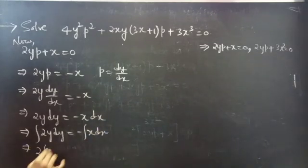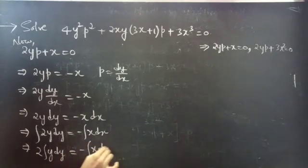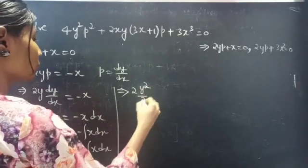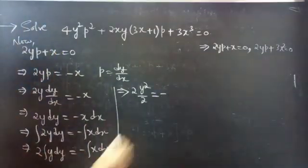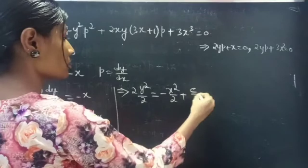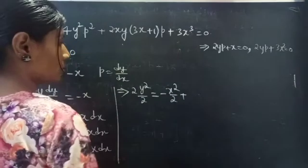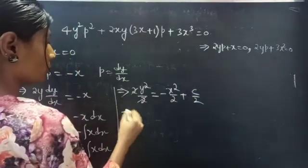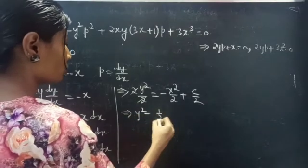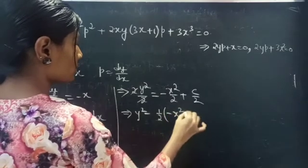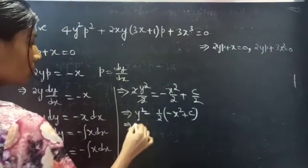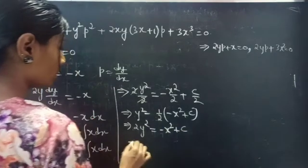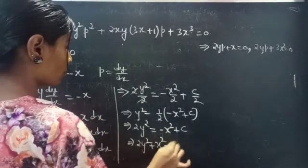Take the constants outside the integral. Then, 2 · (y²/2) = −(x²/2) + c/2. We can write the constant as c/2. Then, y² = −(1/2)x² + c. Taking the 2 to the LHS gives 2y² = −x² + c.